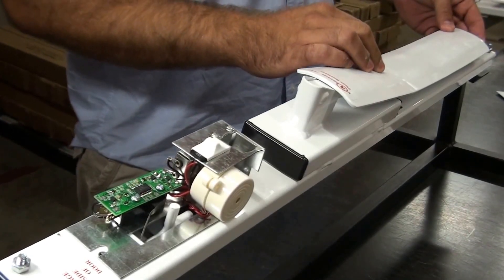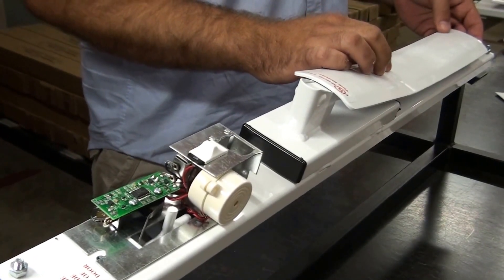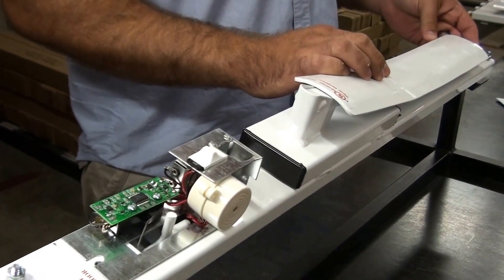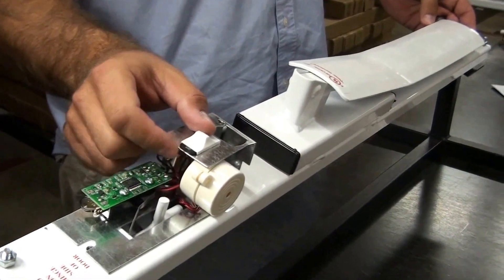This video will cover the adjustment of the limit switch arm. If you pull your paddle out to the locked position and turn the alarm board on and it emits a constant beep, then you may need to adjust the limit switch arm.